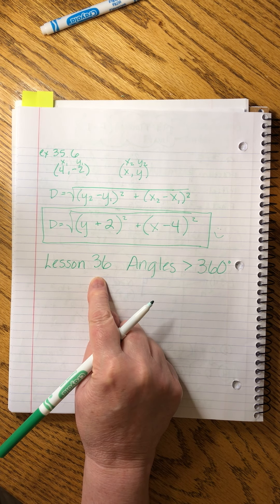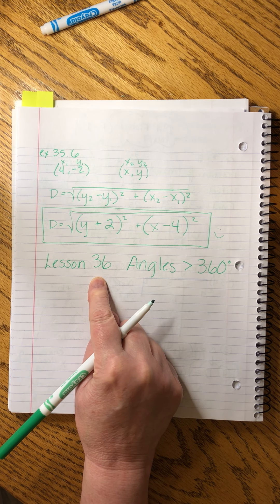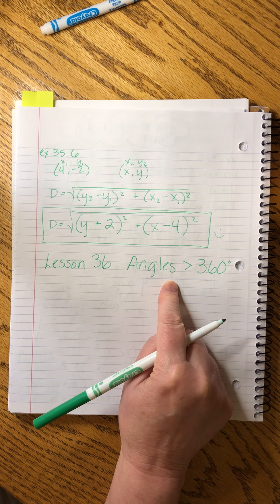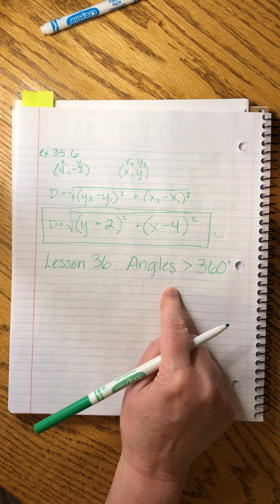Saxon Advanced Mathematics, Lesson 36. We're going to do some trig and talk about angles that are greater than 360 degrees.